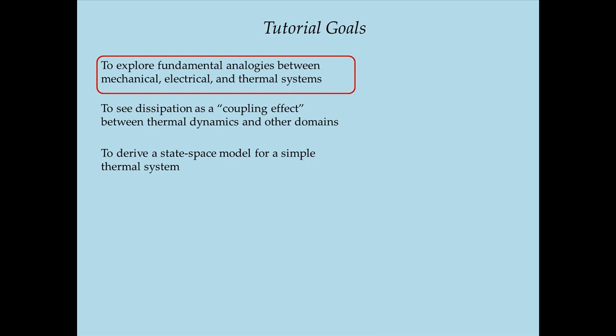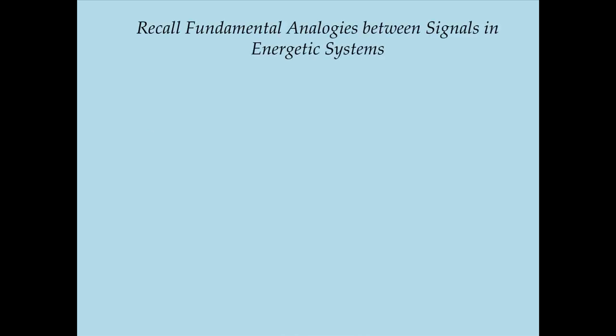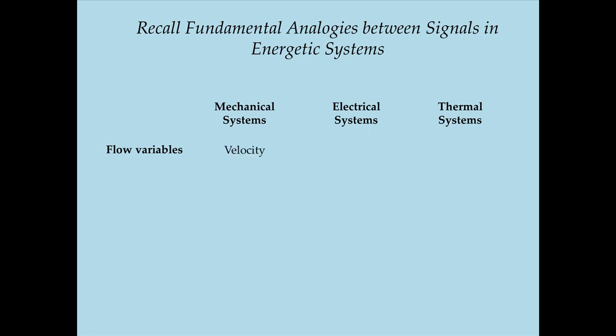I want to start by recalling the fundamental analogies between signals in these domains. In our bond graph-inspired listing, we divided signals into flow signals and effort signals. The first question is: what are the flow variables? In a mechanical system, the flow variable is usually a speed or velocity in a translational system, or an angular speed in a rotational system. In an electrical system, the flow variable is current.